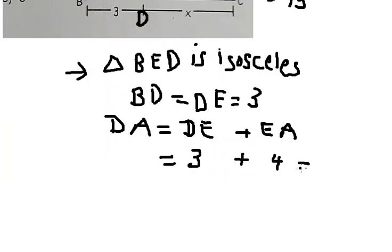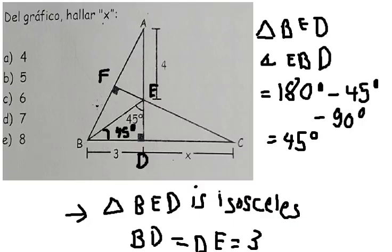DE is number 3 and EA is number 4, so DA equals number 7. Now let's go to triangle ABD.